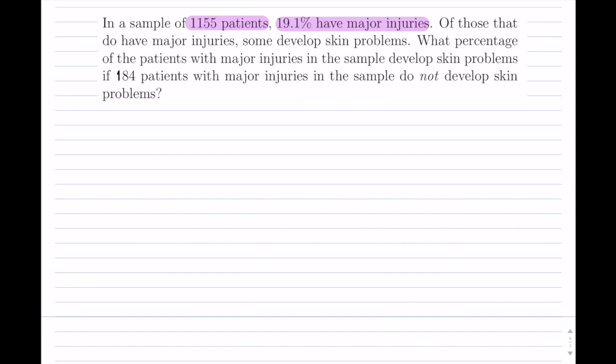Of those that do have major injuries, some develop skin problems. Notice they don't tell us the percent of the skin problems, but they do ask us for it. So they say what percentage, so that's the rate, of the patients with major injuries in the sample develop skin problems. So they want to know what percent with major injuries have these skin problems. So that's what we're looking for. I'm going to come back to that last line in just a second.